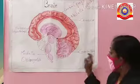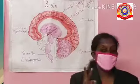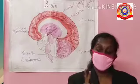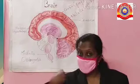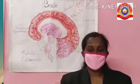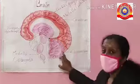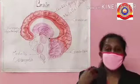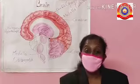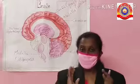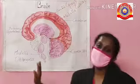The cerebellum has two functions. One is it coordinates muscular activities — running, jumping, and walking are controlled by the cerebellum. The other function is that it maintains the equilibrium of the body, meaning the balancing of the body is also controlled by the cerebellum.